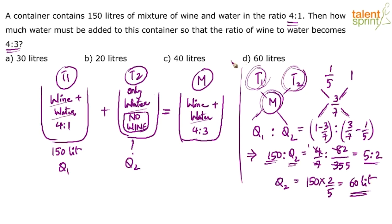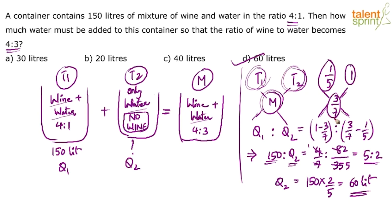So your answer is option B — 60 liters. If you add 60 liters of water to this mixture, you get a mixture in which the ratio is 4 is to 3. I hope you understood how we obtained 1/5, 1, and 3/7.